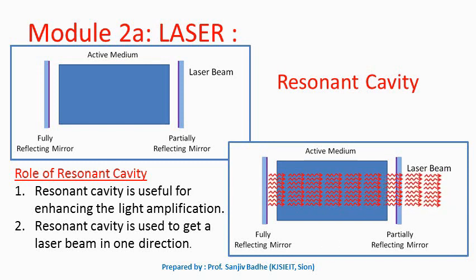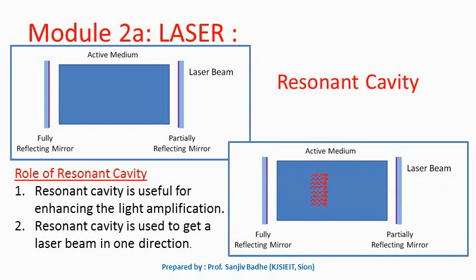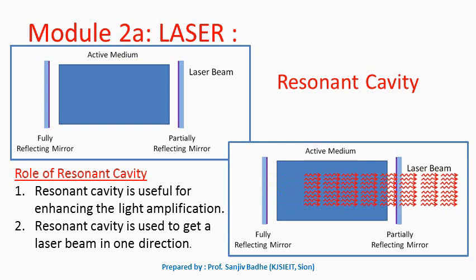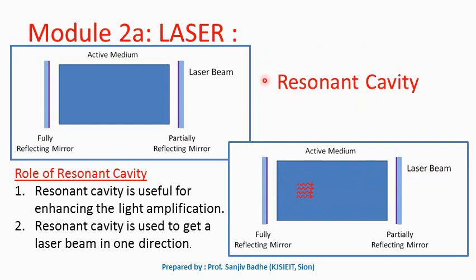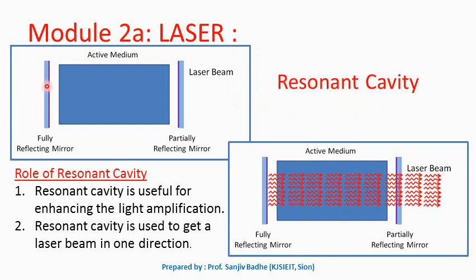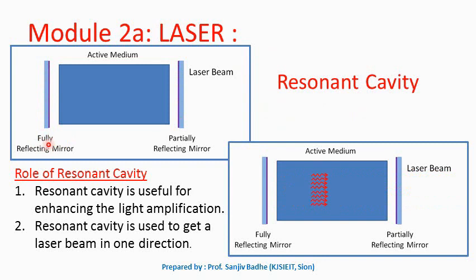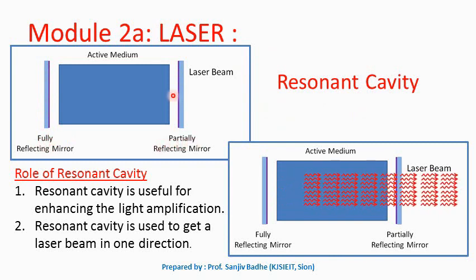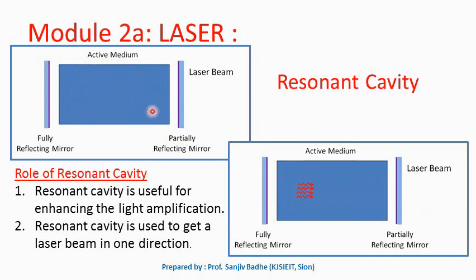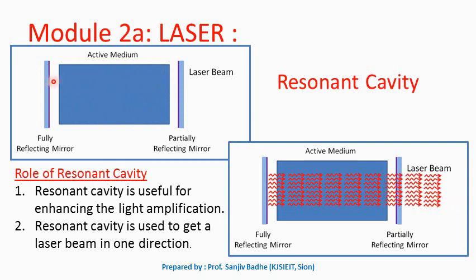The laser beam should travel in a single direction and should be highly intense. To achieve this, we use a resonant cavity. This resonant cavity is an arrangement of two mirrors — one fully reflecting mirror and one partially reflecting mirror — with the active medium, whose atoms have a metastable state, kept inside.